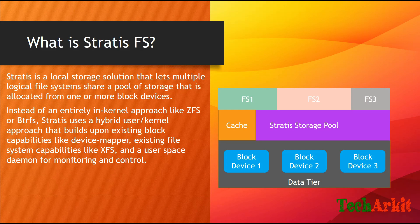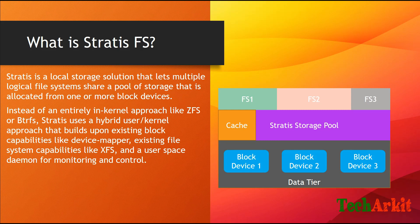Caching can be implemented using SSD drives or faster drives for better performance. On top of the storage pool, you can create multiple file systems — file system 1, file system 2, file system 3. Instead of an entirely in-kernel approach like ZFS or BTRFS, Stratis uses a hybrid user/kernel approach that builds upon existing block capabilities like device mapper and existing file system capabilities like XFS.